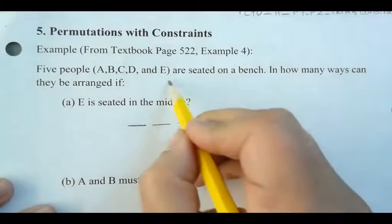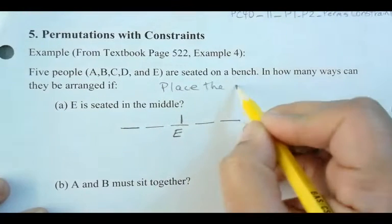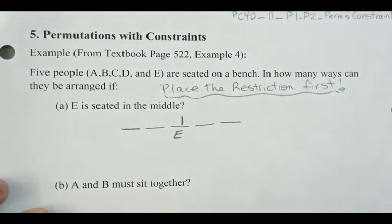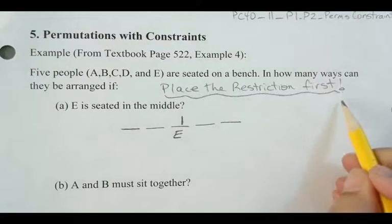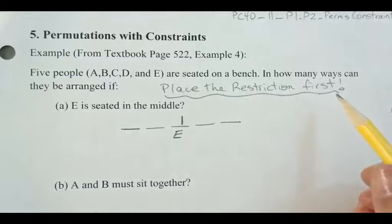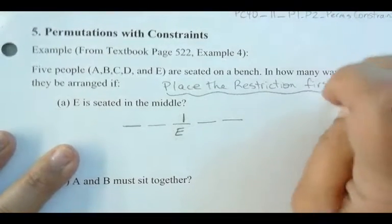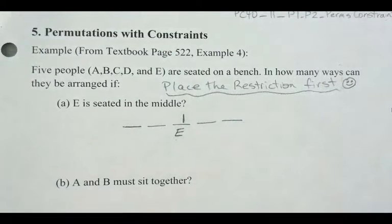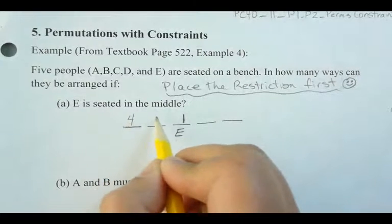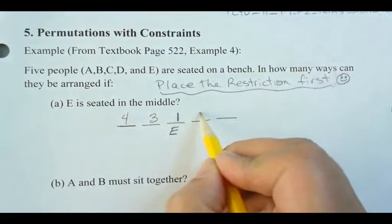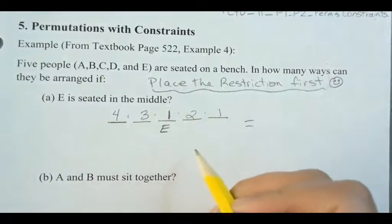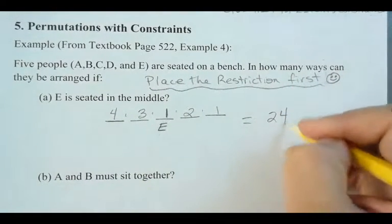The key is to place the restriction first. So with E fixed in the middle, how many people are left? Four. Four people can sit in the first spot, three in the second, two in the third, and one person left for the last spot. Multiplying all these values together gives us 24. So there are 24 different ways we can arrange the remaining people.